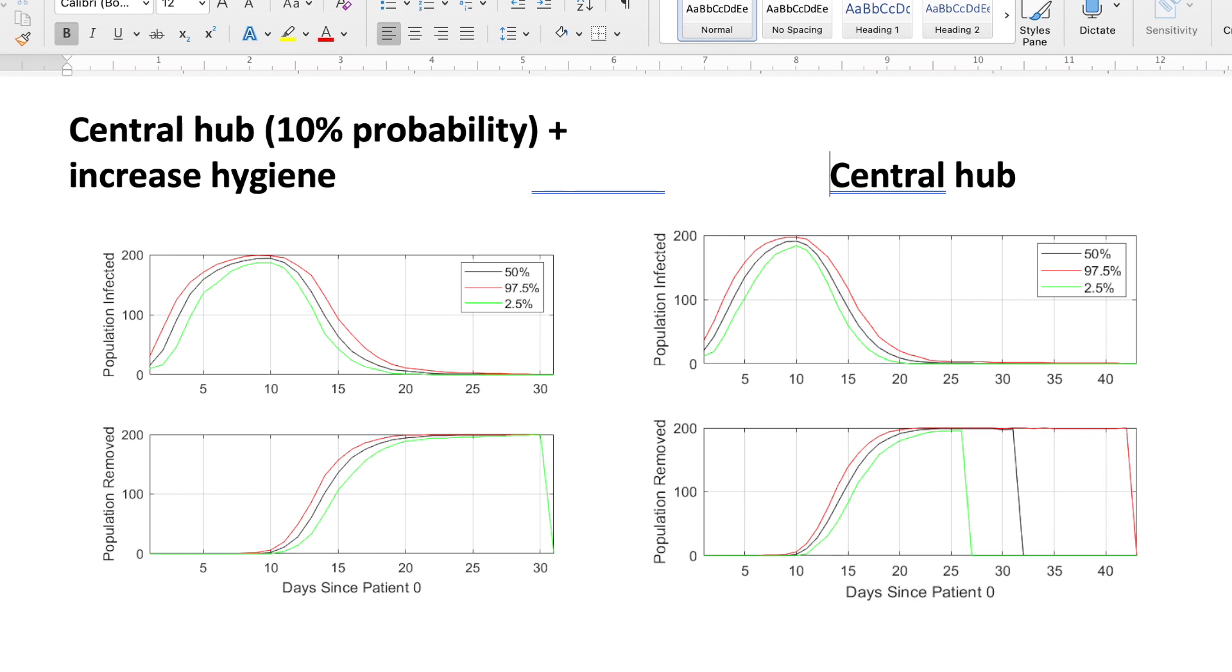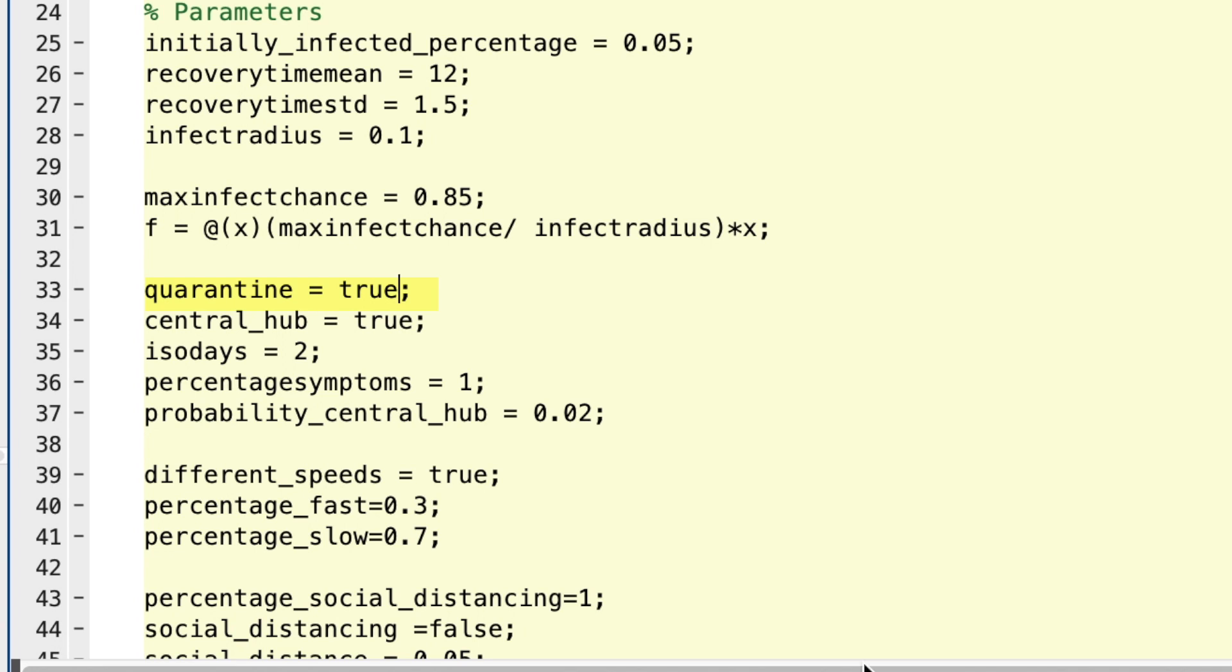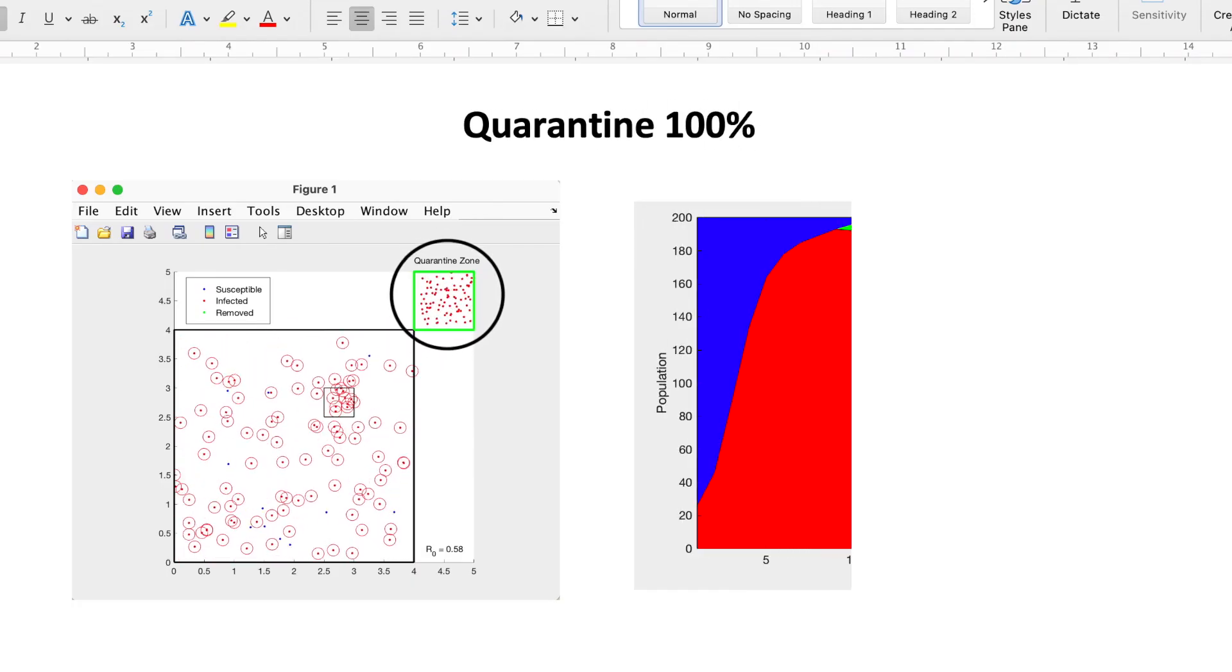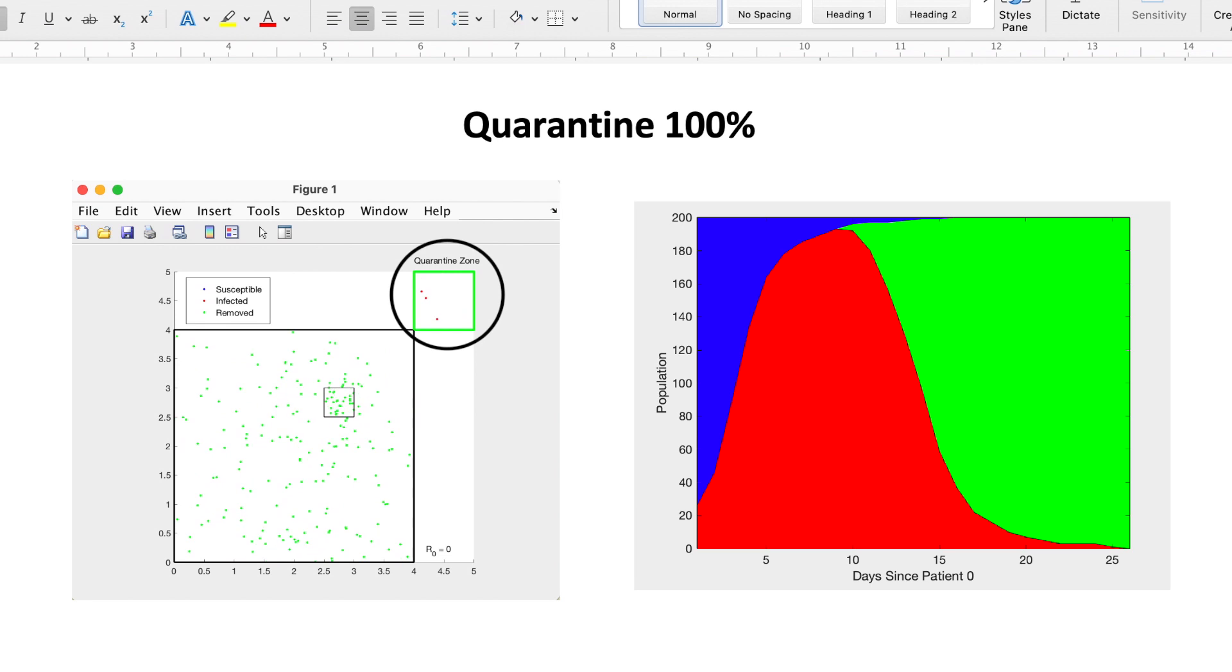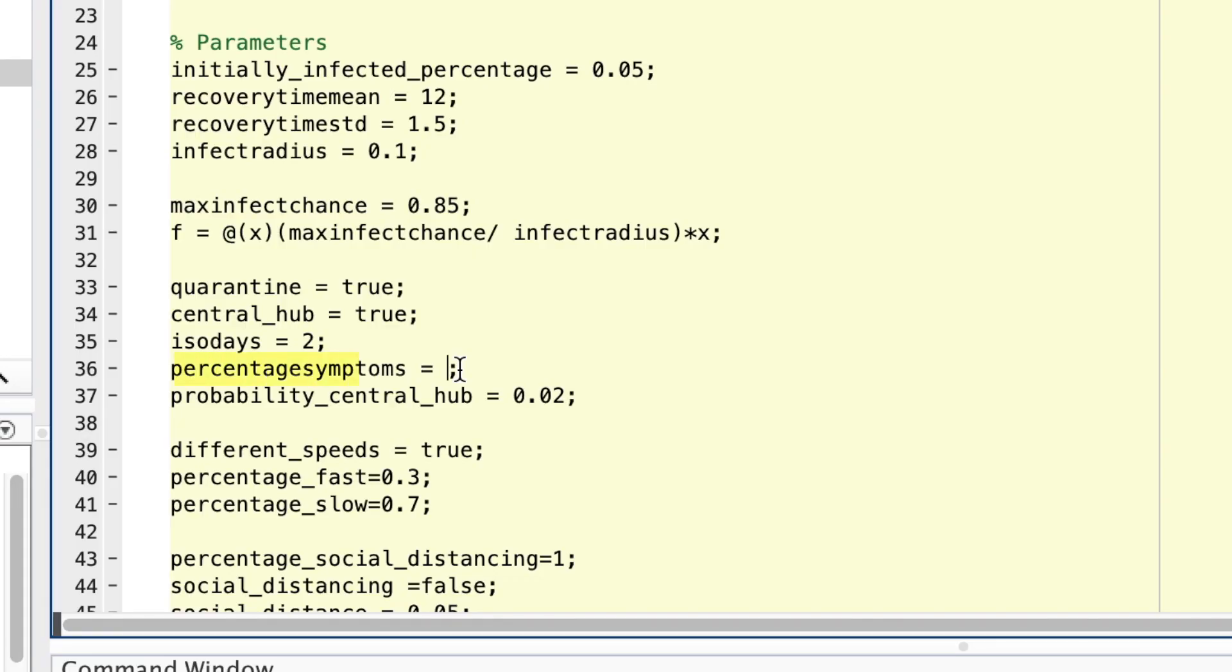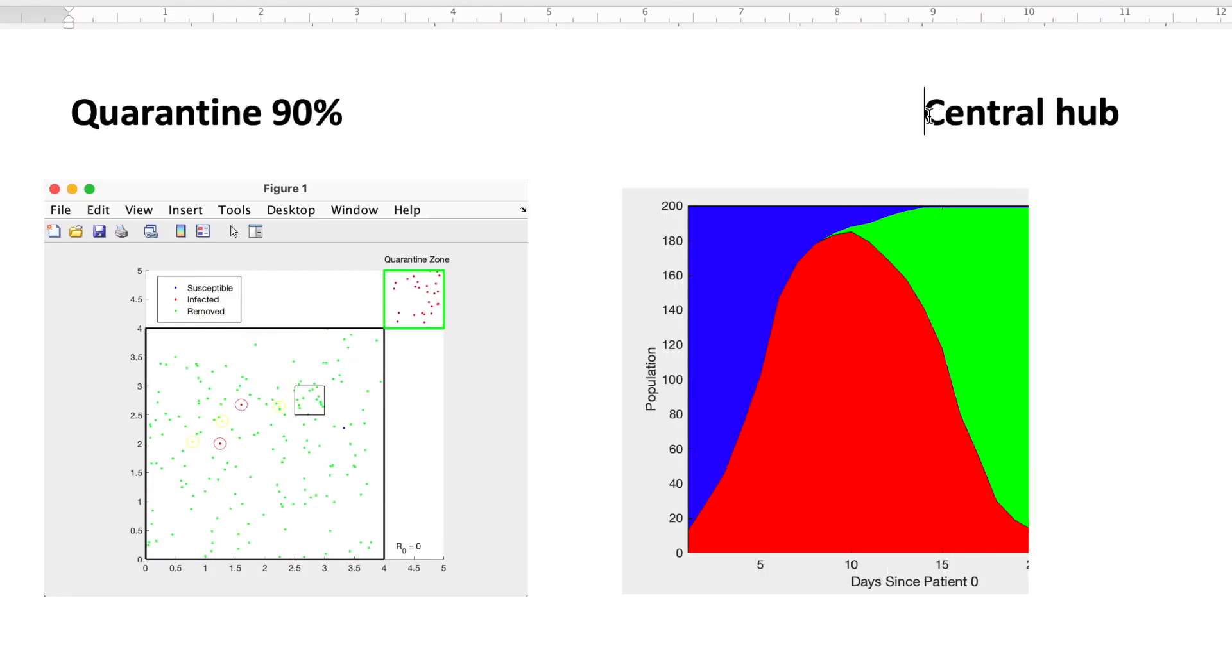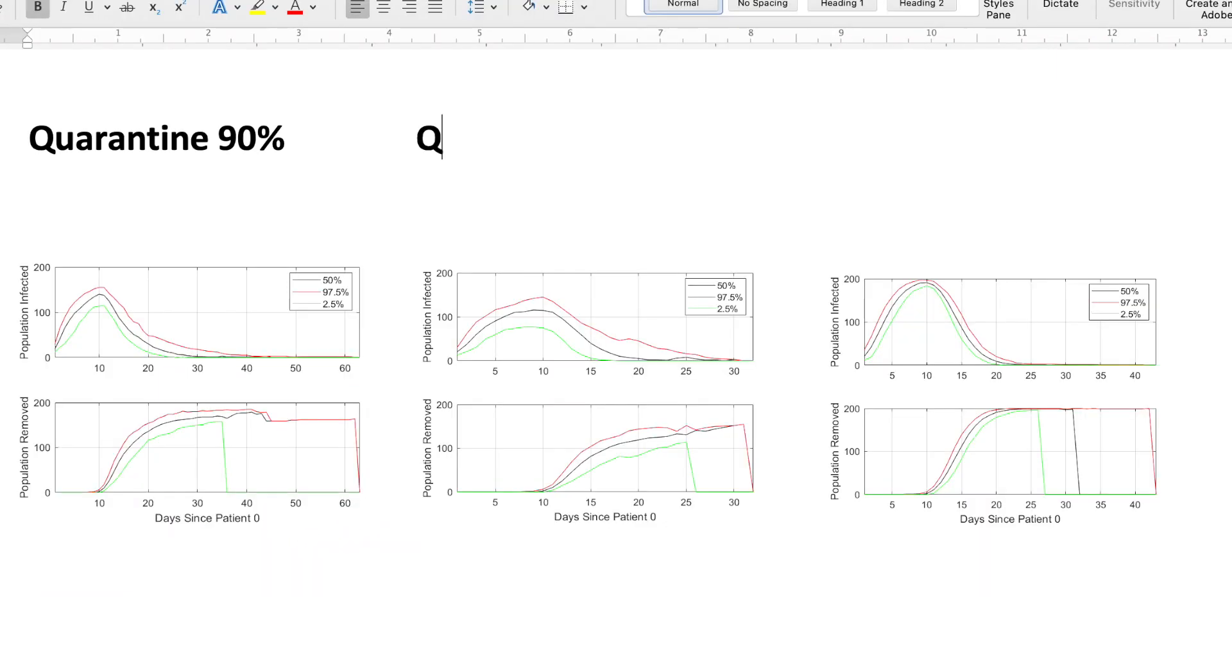Next on the list was quarantining. This was done by identifying and isolating whoever was infectious. With 100% of the population quarantining, the number of infections per day is the lowest. So what if 10% of the population is asymptomatic? The average peak of cases per day is above 100. The curve tails off as days pass and the infection does not reach the entire population.